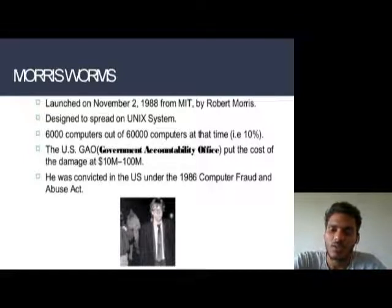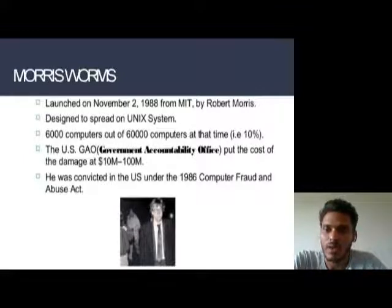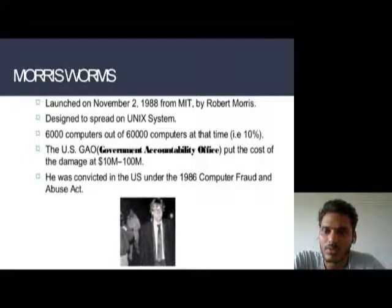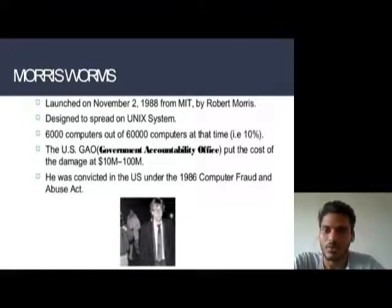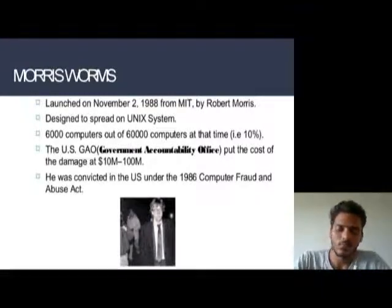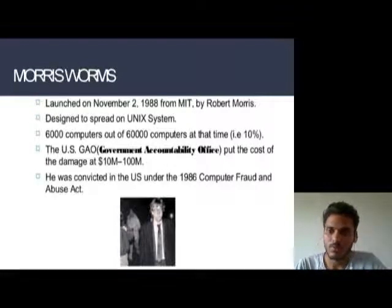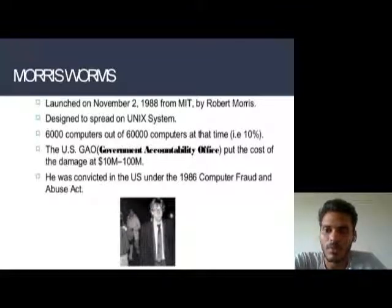The first example is the Morris worm. It was launched on November 2, 1988 from MIT by Robert Morris. It was designed to spread on Unix systems and infected 6,000 computers out of 60,000 — that is 10%. The US GAO (Governmental Accountability Office) put the cost of damage at $10 million to $100 million dollars. Morris was convicted under the 1986 Computer Fraud and Abuse Act.